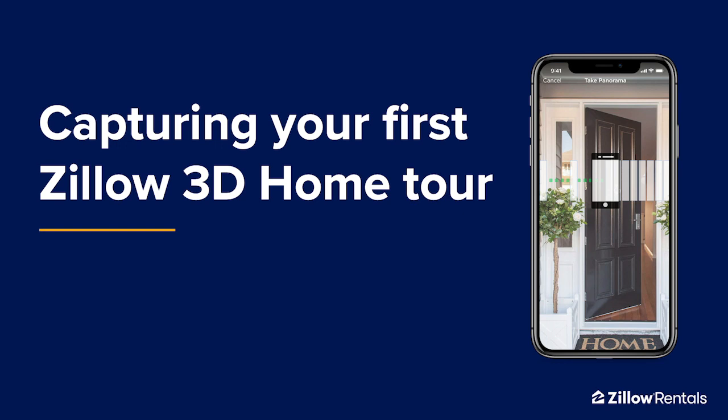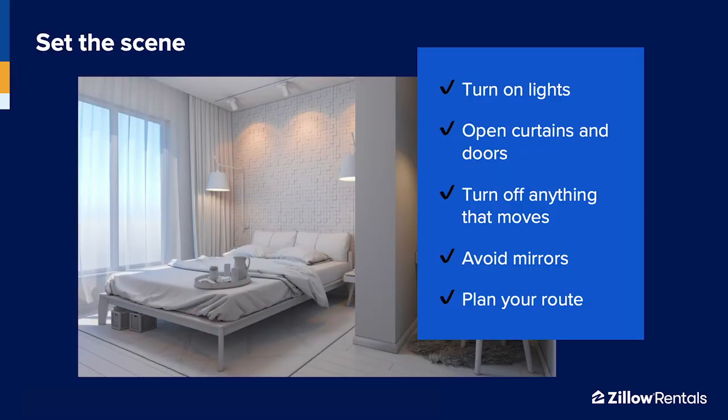So let's walk through the basics of creating your first Zillow 3D Home tour. First, let's talk about some prep work. Turn on the lights, open all the curtains, and open all the interior doors. Turn off any fans, TVs, or other things that might move or cause a distraction. Watch out for mirrors that might capture you or your camera in the shot. Finally, plan your route. You'll need to follow a continuous path through the property so the app knows how to stitch your virtual tour together later.